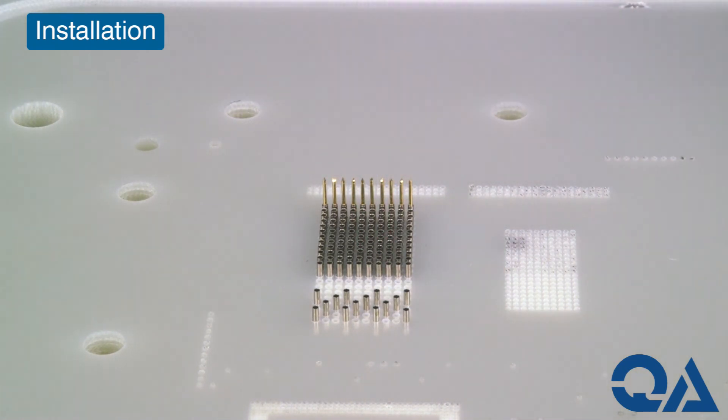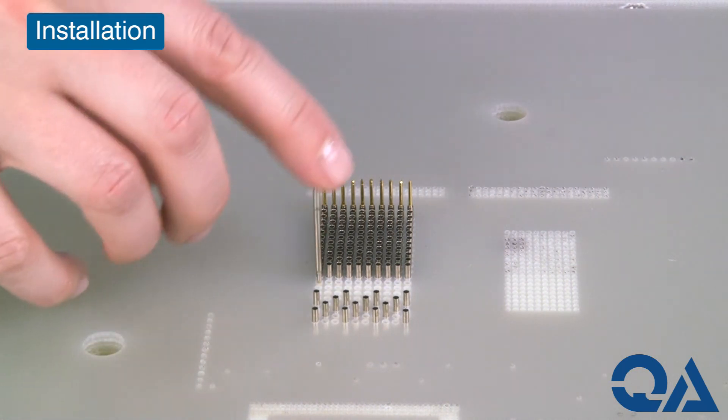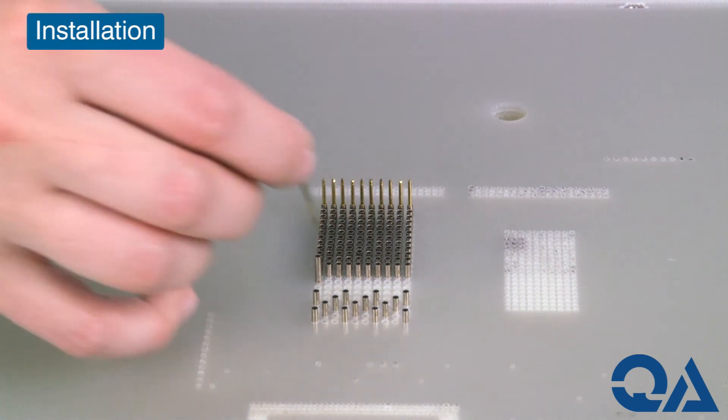The socket should drop easily into the hole, with the press ring contacting the top surface of the mounting plate.